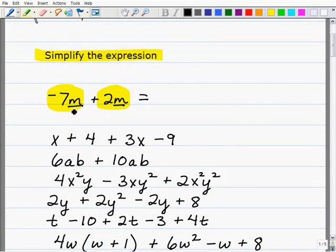You can combine them by simply adding the coefficients, and that's the numbers in front of the term. So negative 7 and 2 is going to be negative 5m. So we added the coefficients. You can add the coefficients when the terms are like. So this is the simplified version of that expression, and that's all we're doing here.